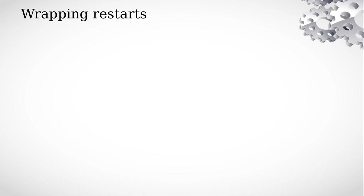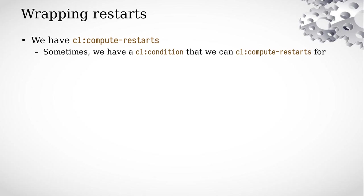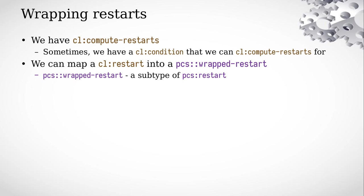However, there is one key difference from the handler case: we are able to compute restarts. We are able to retrieve restart objects, which are first-class — unlike handler objects — and so we can operate on them. Our technique for this is called wrapping restarts, which functions a little like foreign condition objects but is more advanced. First, we are able to compute host restarts. Sometimes we also have a condition object passed to us — for example, when invoking the host debugger, we always have the condition it was entered with. We can map one-to-one each host restart object into a wrapped restart object on the guest side.